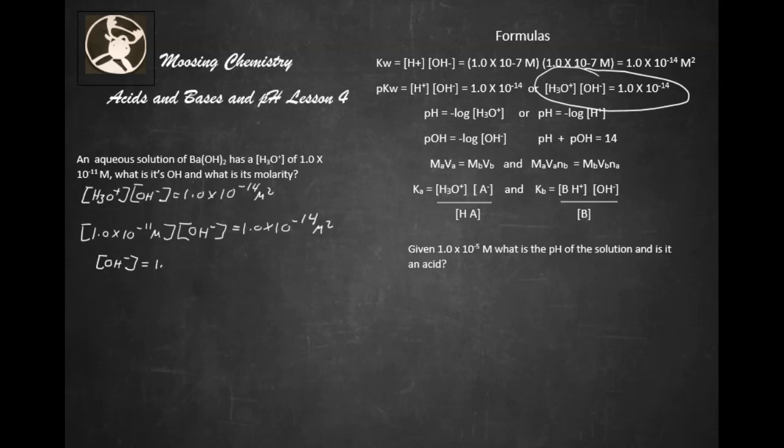So now what we get is our OH- ion, and that's going to equal... So that M is going to cancel out one of those M's, right? And when we do the math, that's going to give me an OH- ion of 1.0 times 10 to the negative 3 M.